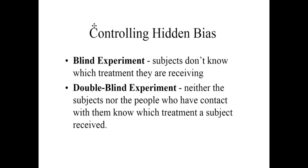Controlling for hidden bias: the difference between a blind and a double-blind experiment. In order for the control and treatment groups to be treated exactly the same, both the subjects and the person administering the treatment should be blind. In a blind experiment, the subject does not know which treatment they are receiving. In a double-blind experiment, neither the subject nor the person administering the treatment knows which treatment the subject received. The treatments are typically coded with a number that only the researcher analyzing the final results knows.